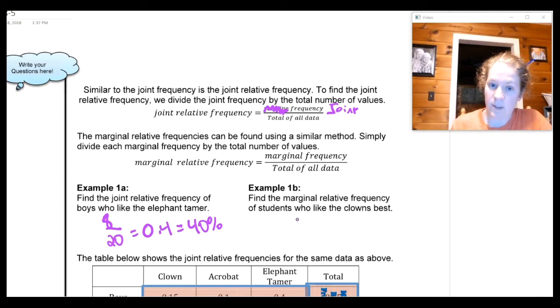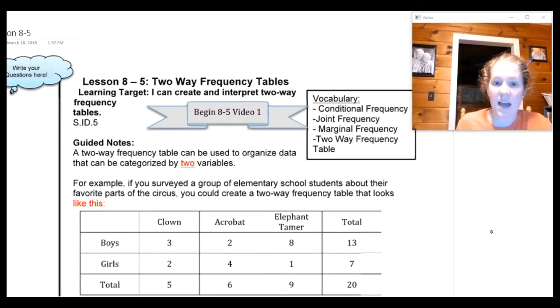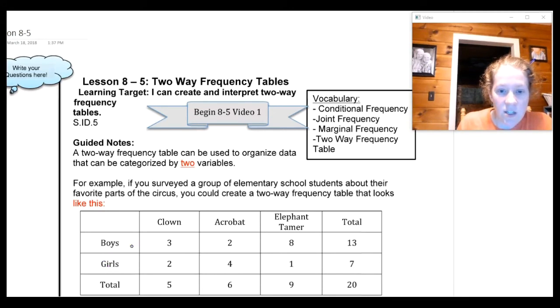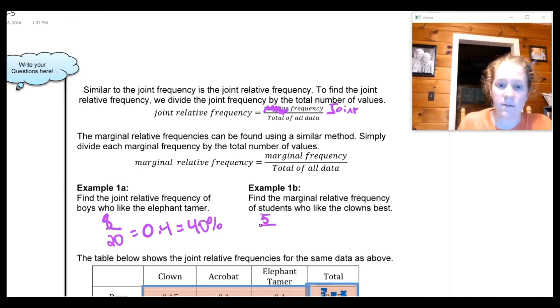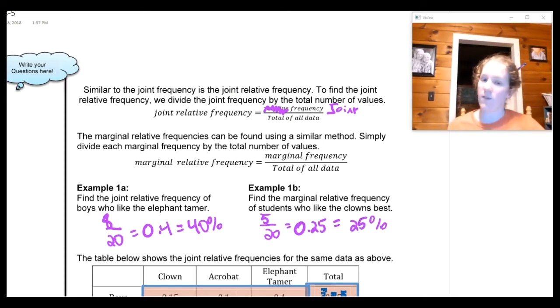If I ask you for a marginal relative frequency of students who like the clowns best, then that means I'm going to take a marginal frequency, all the students who like clowns, and divide it by the total number of pieces of data. Going back to that original table, students who like clowns we had a total number of 5. The grand total of data values is 20. So I'm going to have 5 divided by 20, the marginal frequency divided by the total of all data, and when I divide 5 by 20 I get 0.25 or 25 hundredths or if you want to write it as a percentage then it would be 25%.